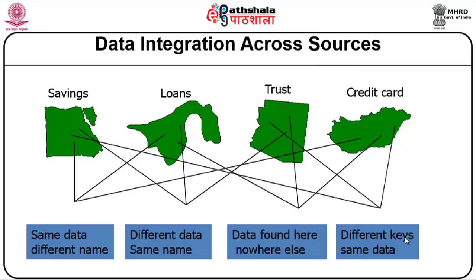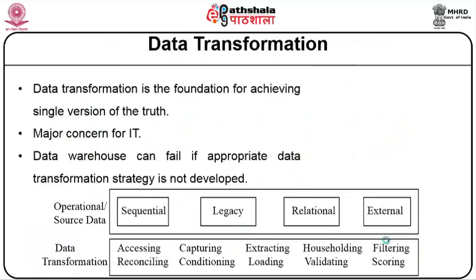From the definition of data warehouse, we introduced a property called integration. Integration is collecting data from different sources and producing it into one specific format. For example, savings, loan, trust, credit card — different processes — can have the same data with different names or different data with the same name, data found here but nowhere else available, or different keys on the same data. What I try to integrate is transforming all the data into one similar format. Data transformation is the foundation for achieving a single version of the truth — a major concern for most IT concerns. A data warehouse can fail if an appropriate data transformation strategy is not developed. Any operational data source will have sequential data, legacy data, relational data, external data; but after transforming, all accessing and reconciling can happen — capture, condition, extract, load, household, validate, filter, and score.